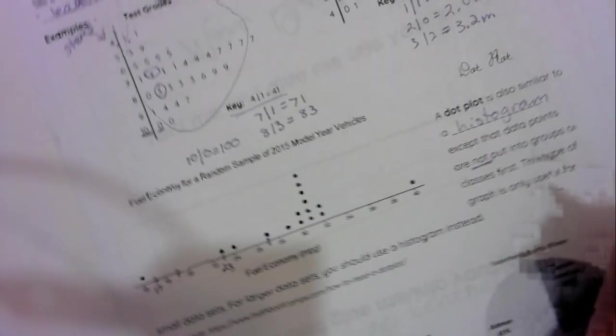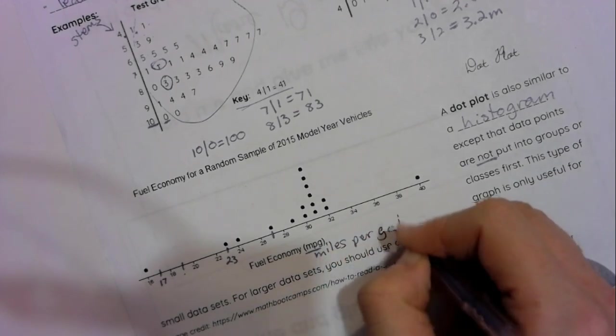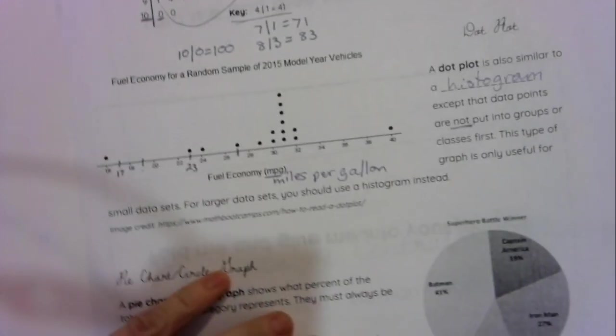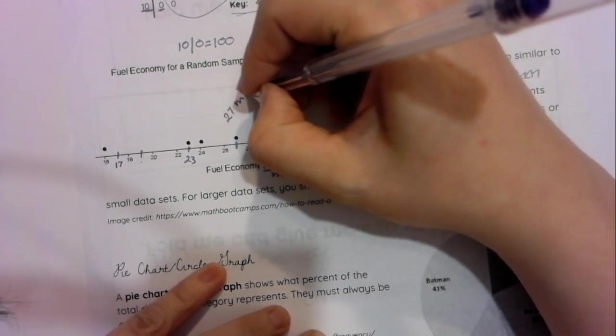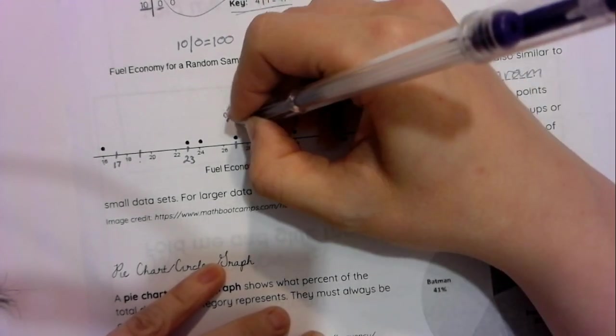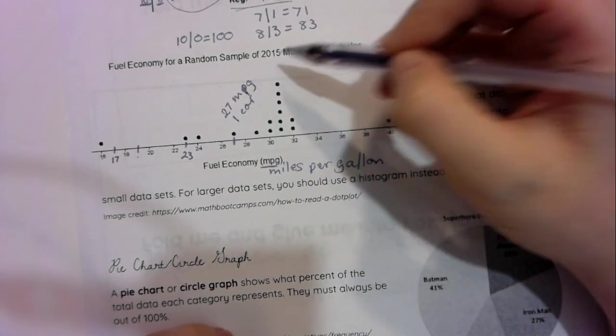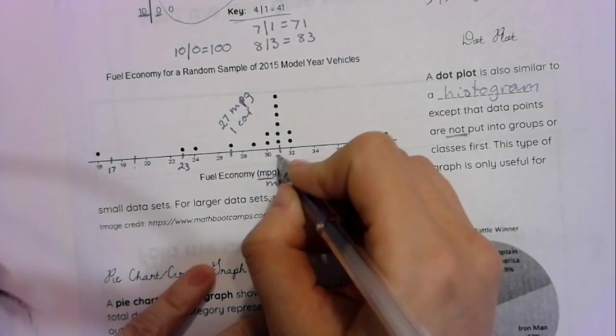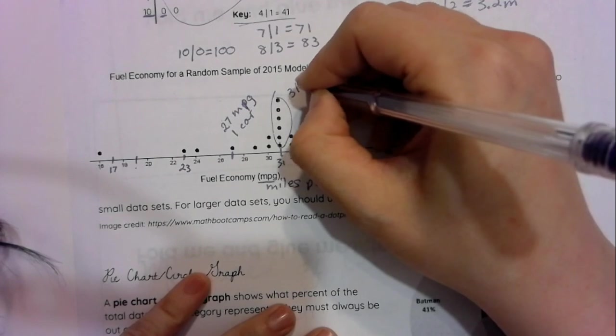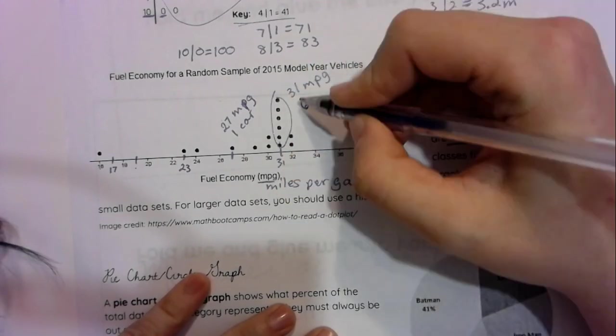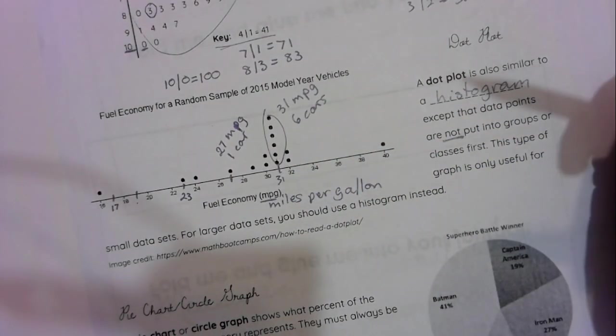For instance, when you're looking at fuel economy, miles per gallon. This right here means that for 27 miles per gallon, there was one car. So there was one car, that little guy right there, with a fuel economy of 27 miles per gallon. With this one, this would be 31. That means there were 1, 2, 3, 4, 5, 6 cars with a fuel economy of 31 miles per gallon. Each dot represents one data point, and they just get stacked on top of each other if your numbers repeat.